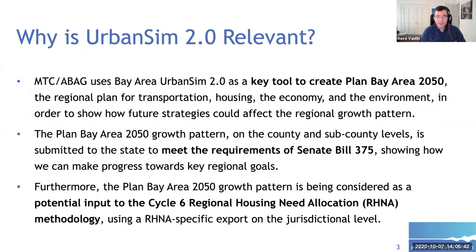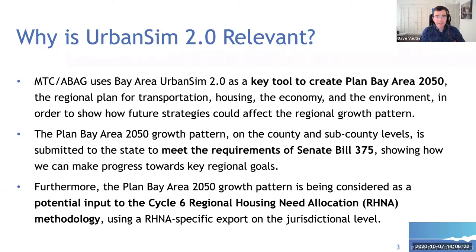Some of you may be technical folks on today's call; others may be members of the public or more policy-oriented. Modeling can seem like a black box — models are complex and developed over many years — but they can provide really useful insights for planners and policymakers. We use Bay Area Urban Sim 2.0 to help create our long-range plan, Plan Bay Area 2050, which looks at transportation, housing, the economy, and the environment, exploring how future public policies could affect the regional growth pattern. That growth pattern is submitted to California to help meet Senate Bill 375 requirements, showing progress toward key regional goals related to climate, equity, and other considerations.